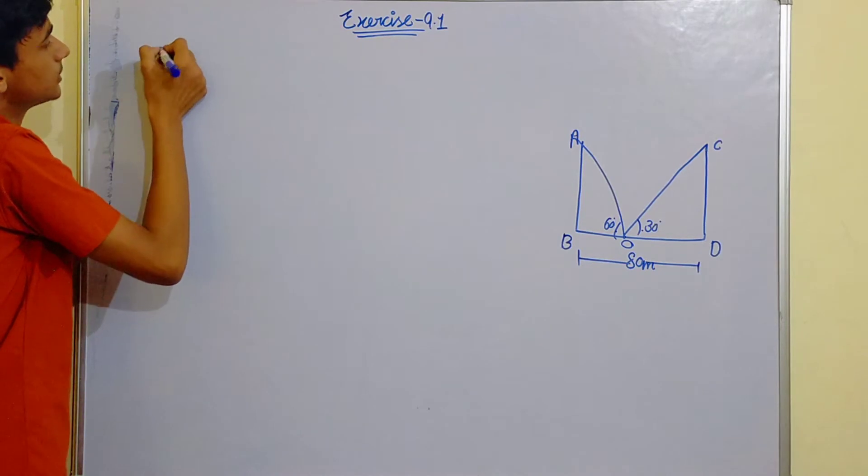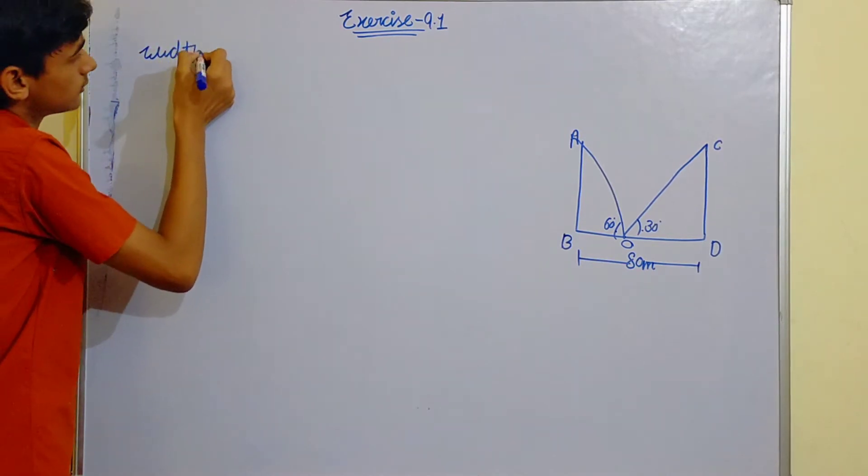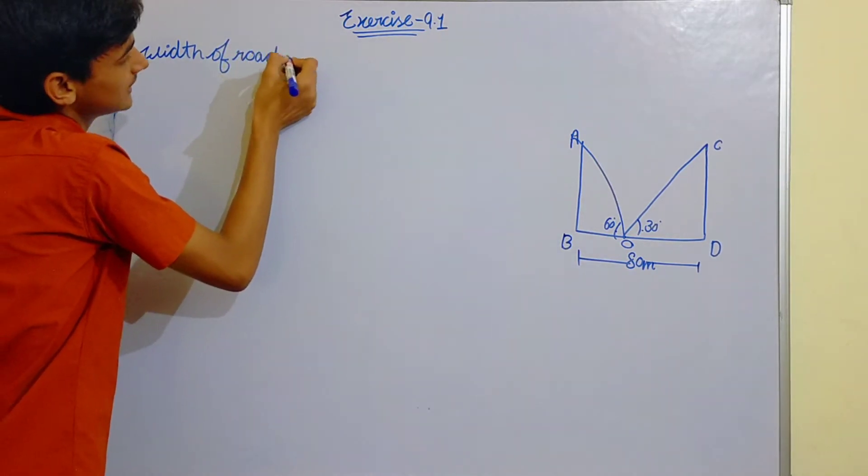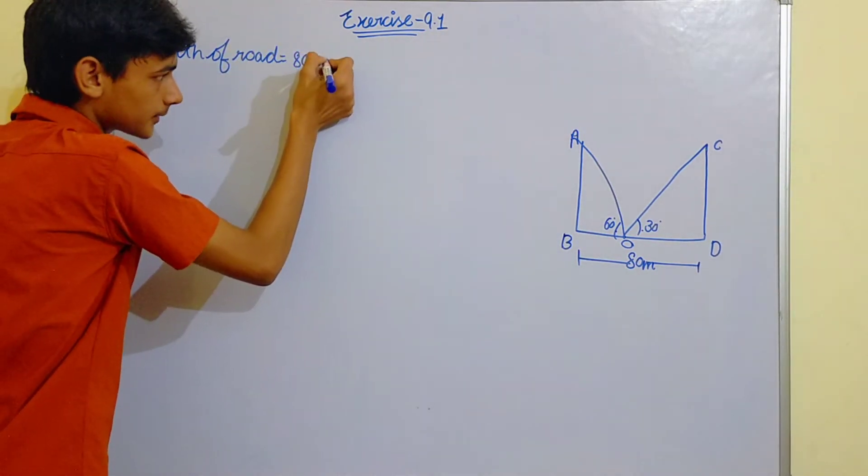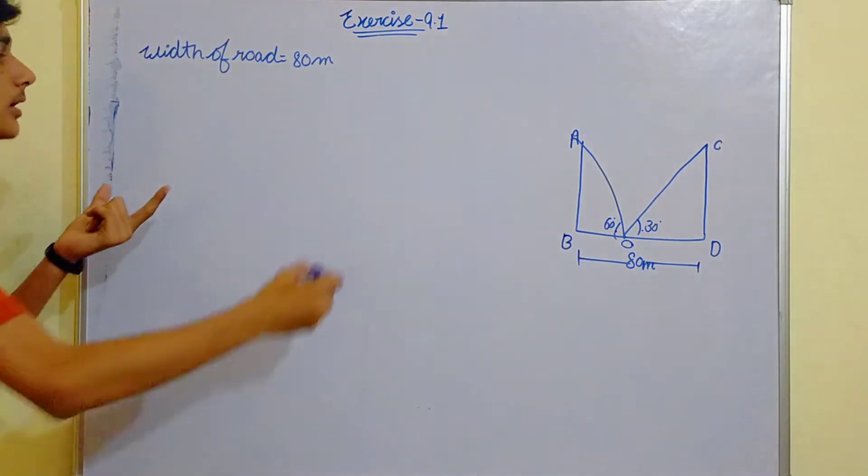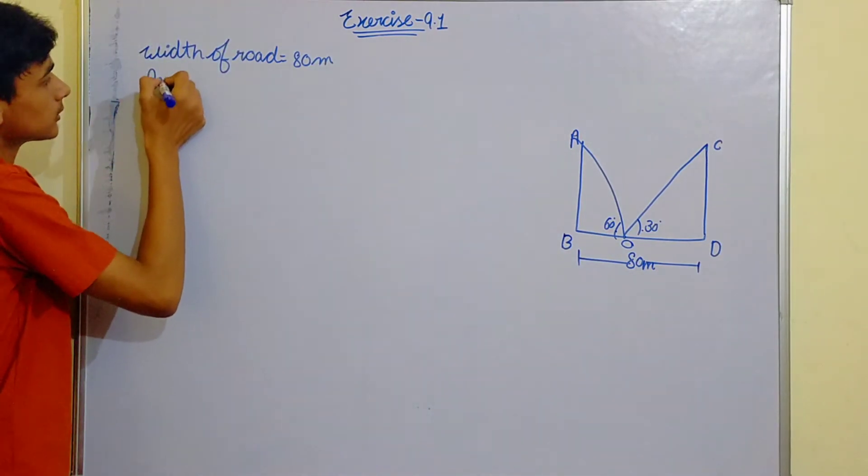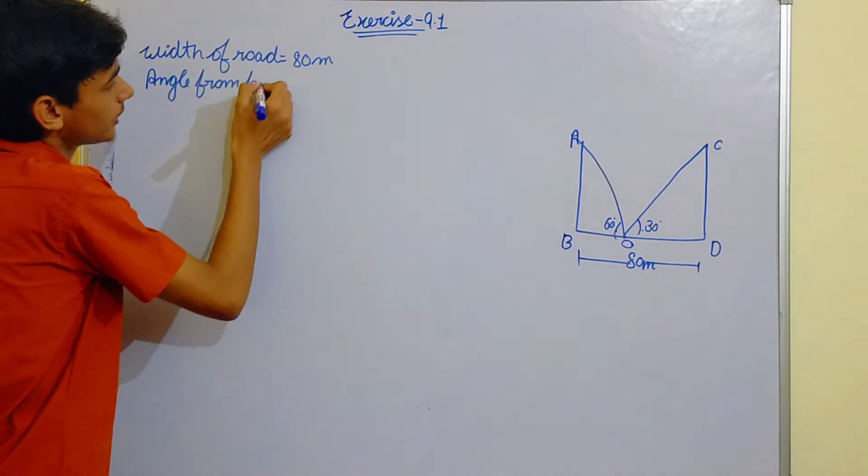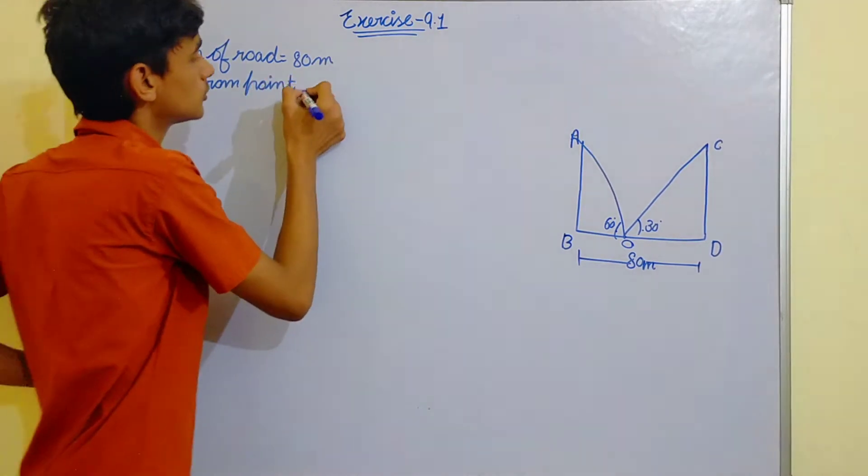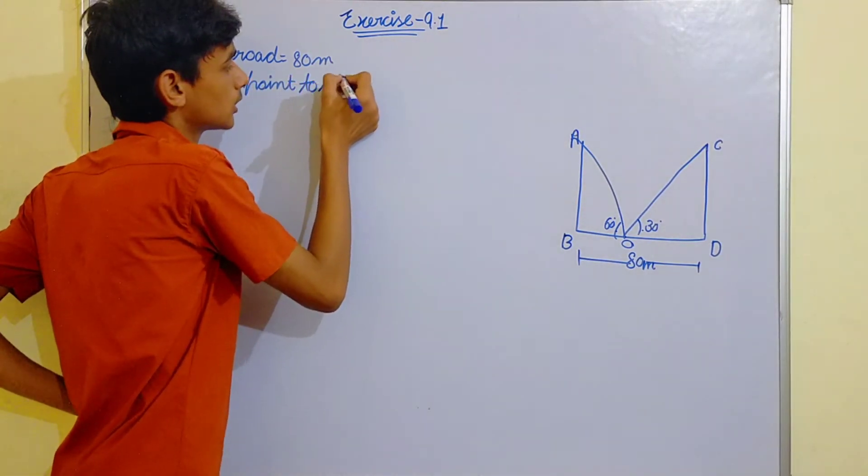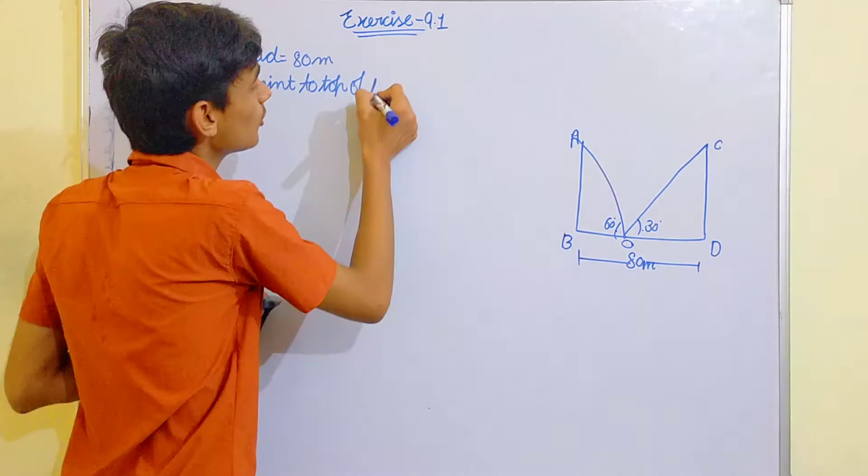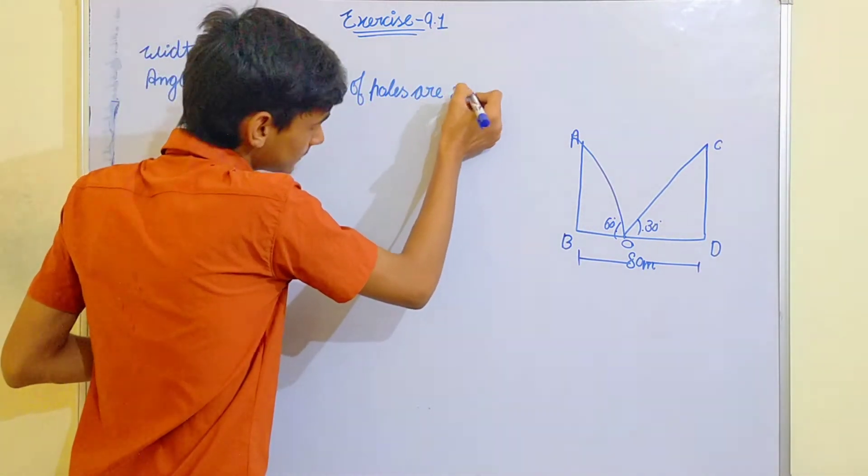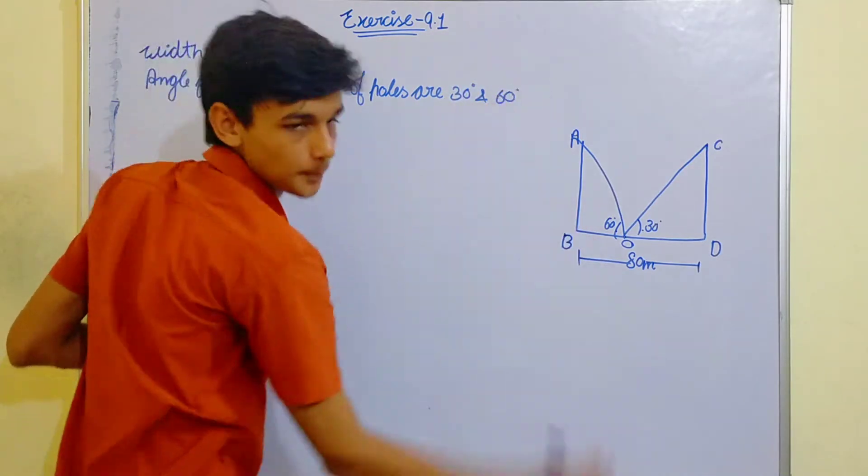Width given, width of the road is equal to 80 meters. Now the angle of the poles are 30 degrees and 60 degrees respectively.